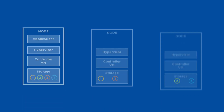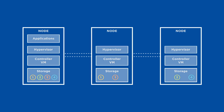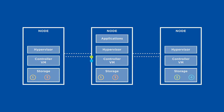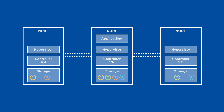Another key design principle for HCI systems is data locality. Data locality keeps data close to applications on the nodes where they are running, which in turn keeps latency low and prevents storage and network contention, especially as your cluster size grows.